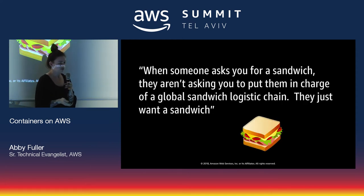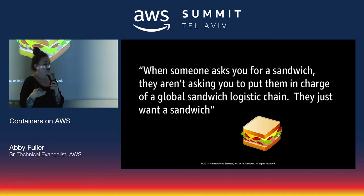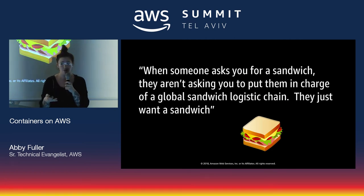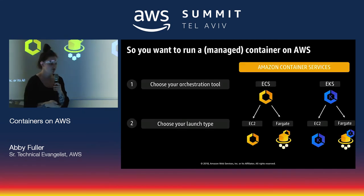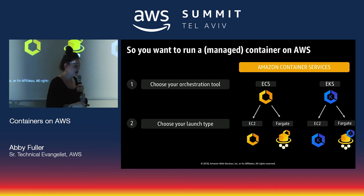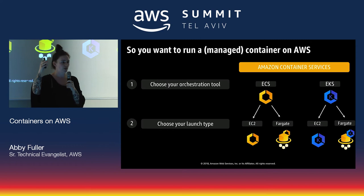The best description I've found: when someone asks you for a sandwich, they aren't asking you to put them in charge of a global sandwich logistics chain — they just want a sandwich. Fargate is just the sandwich. I don't want to know how you make bread or cut turkey or how many pieces of cheese I need. If you want to run a managed container on AWS — assuming general availability — you choose your orchestration tool: either ECS or Amazon Kubernetes Service. Once you've chosen that, you have two different modes.